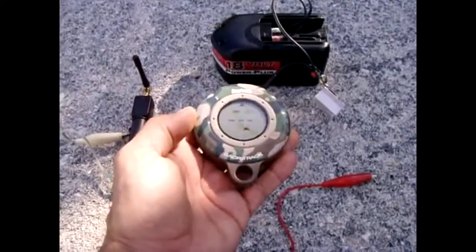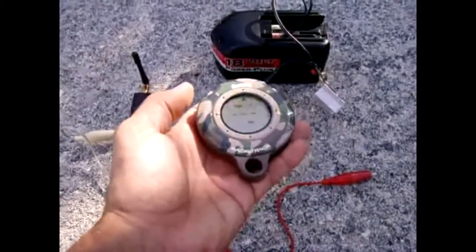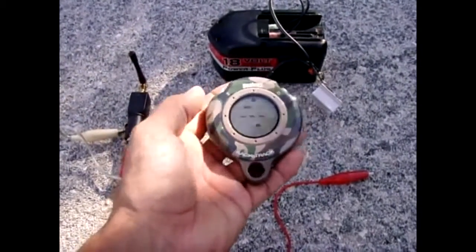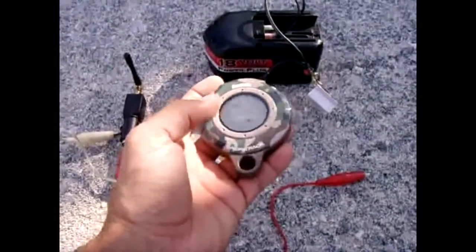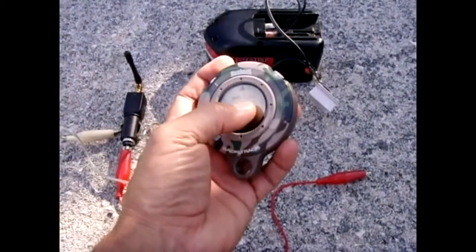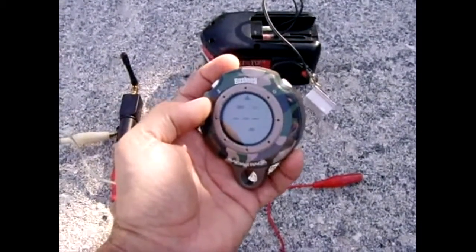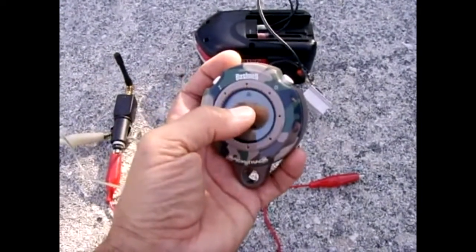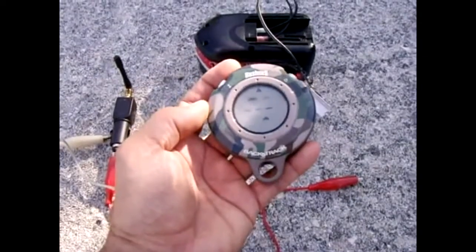Now the GPS device that we're going to test this jamming ability on is this Bushnell Backtrack. When you go hiking, you could push set point and then you could always find your way back to the location that you set. Now you can see the satellite right there is not flashing.